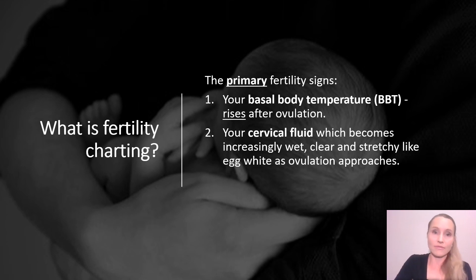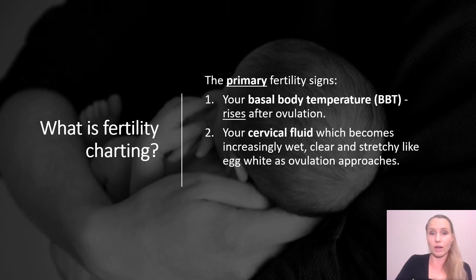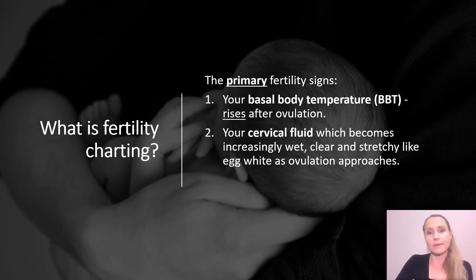The primary fertility signs you're going to learn about are: number one, your basal body temperature, which is going to rise after you ovulate — if it rises, it confirms that you have ovulated in that cycle. And number two, your cervical fluid, also sometimes called cervical mucus, which becomes increasingly wet, clear, and stretchy like egg white as ovulation approaches.